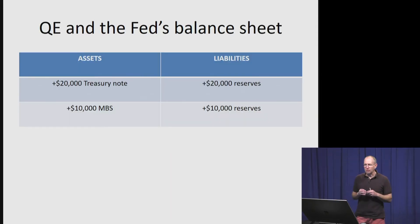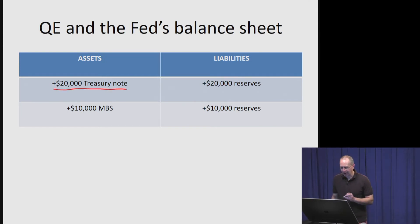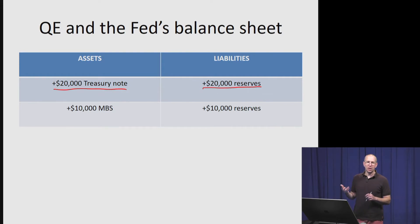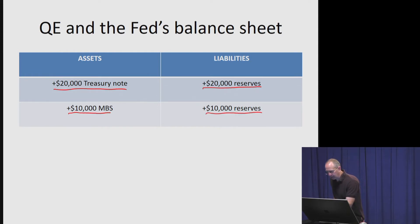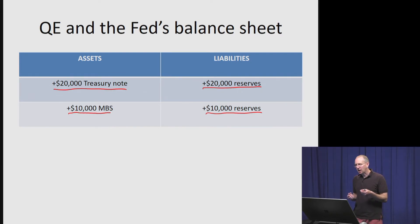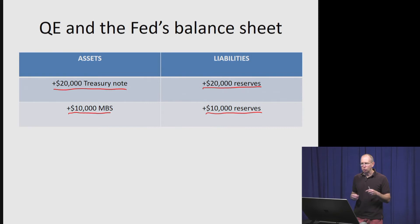Here's what the QE programs did to the Fed's balance sheet — not to scale, just small examples. When the Fed bought a $20,000 treasury note, that showed up on the asset side of its balance sheet. To pay for that treasury note, the Fed would credit banks' reserve accounts by $20,000, supposing they bought it from a commercial bank. If they bought a $10,000 mortgage-backed security, likewise that would show up on the balance sheet, and they would credit bank reserve accounts by $10,000. QE programs increase the value of both the Fed's assets and liabilities, with reserves on the liability side increasing just as with standard open market operations.